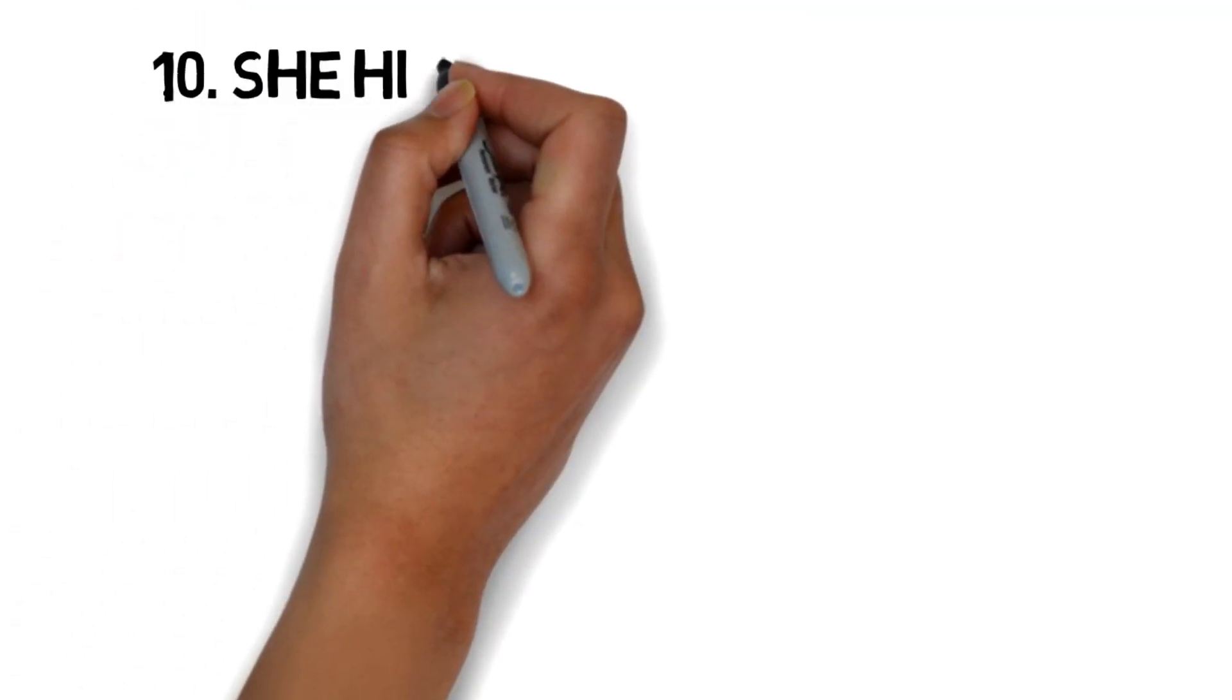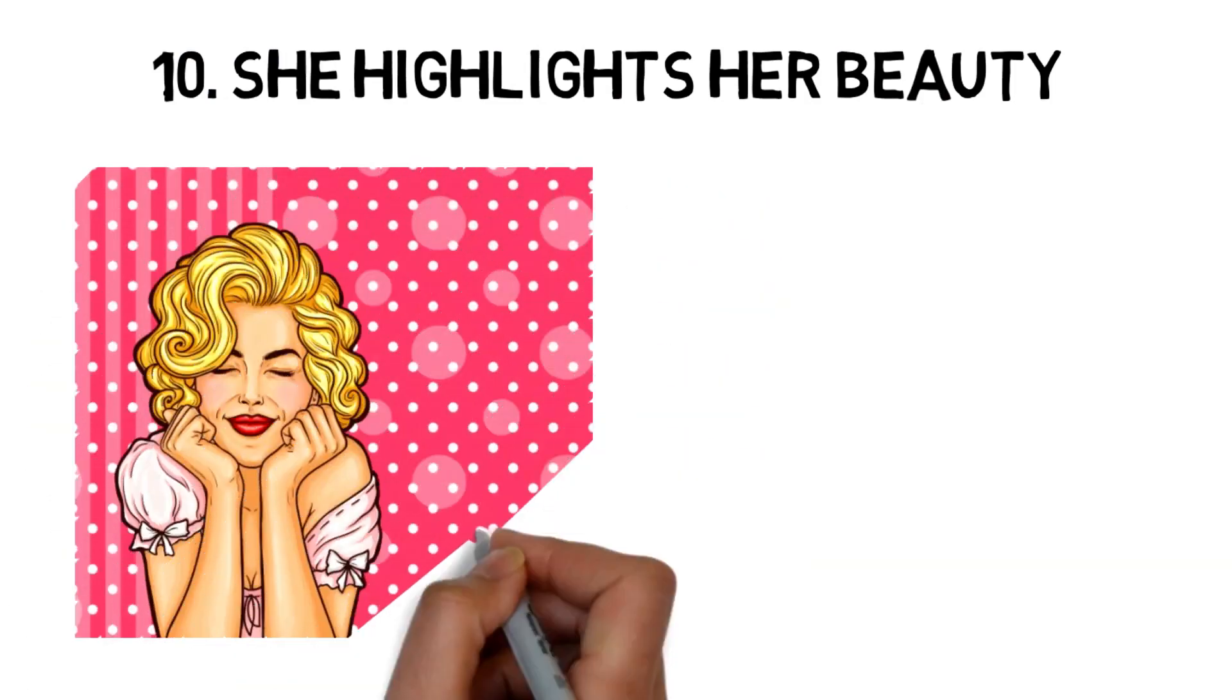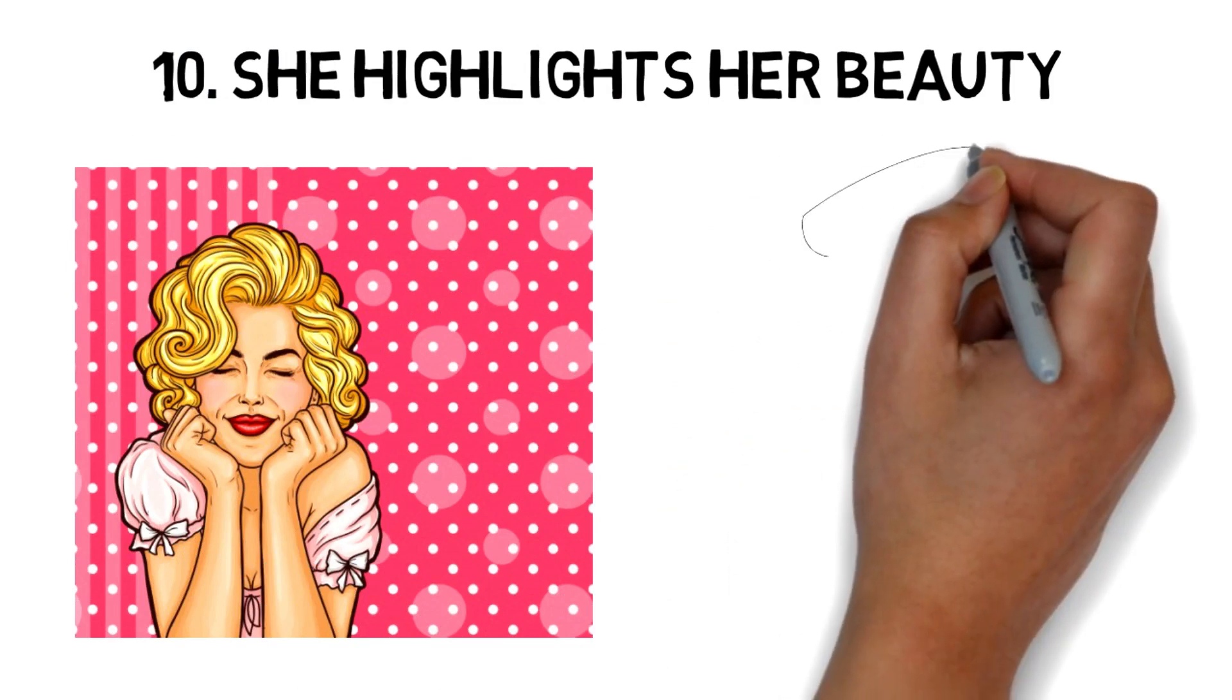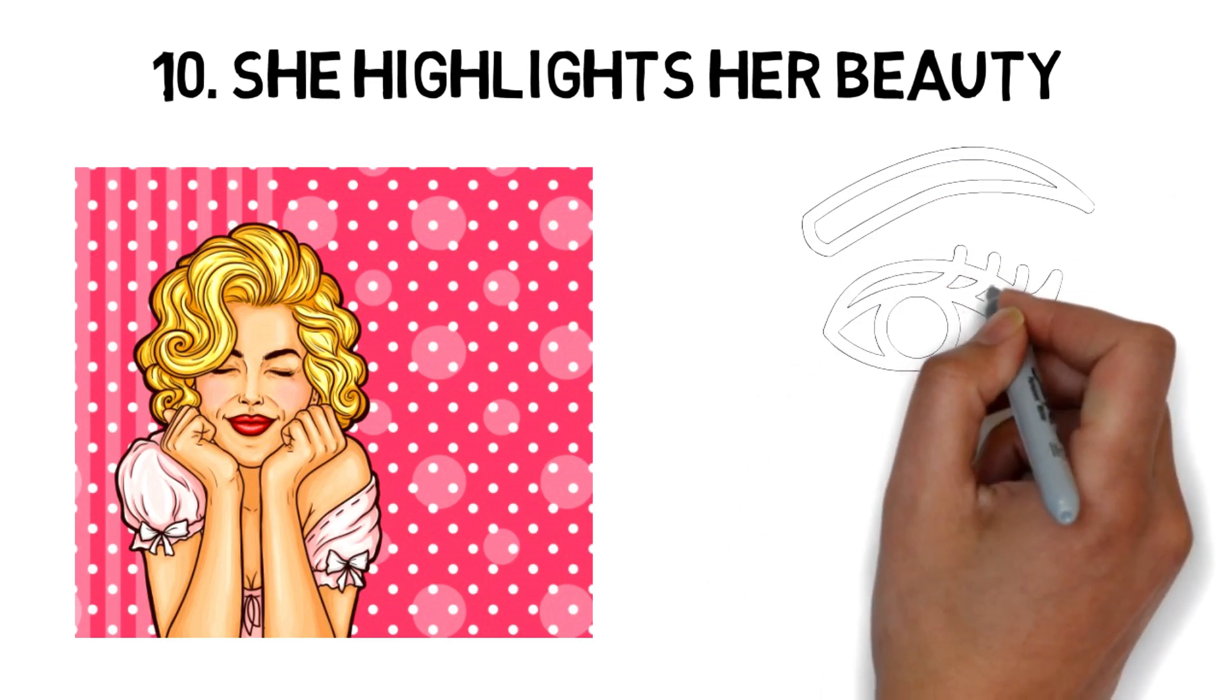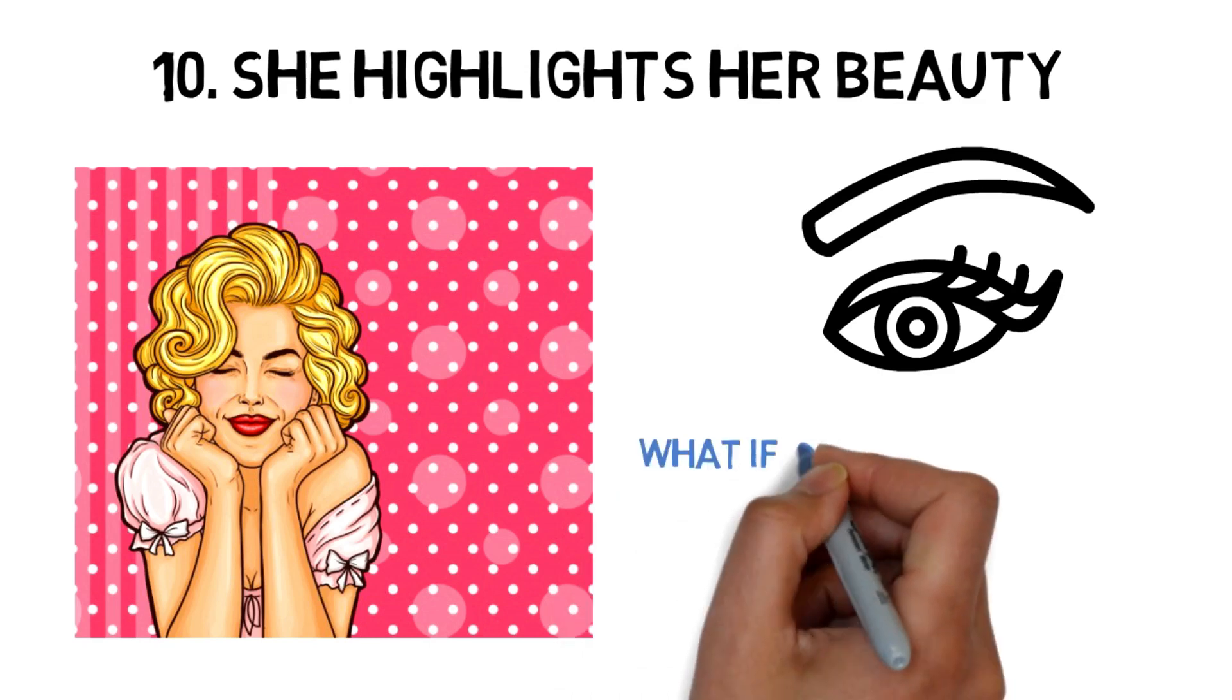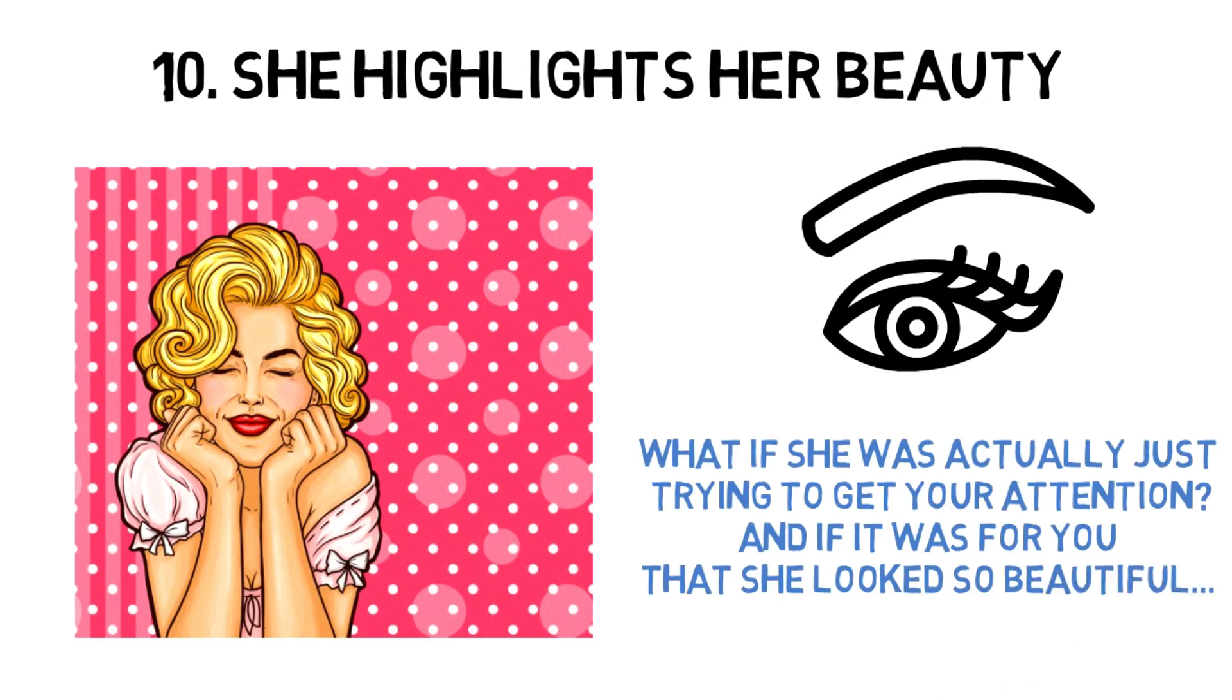10. She highlights her beauty. She is beautiful, and in your eyes, she always has been. But lately, she's been dressing a little differently, often wearing new clothes, a new lipstick. She who liked a casual style may suddenly seem sexier. When you are together at a party, you notice that she has done everything to look attractive that evening. A question arises. What if she was actually just trying to get your attention? And if it was for you that she looked so beautiful?